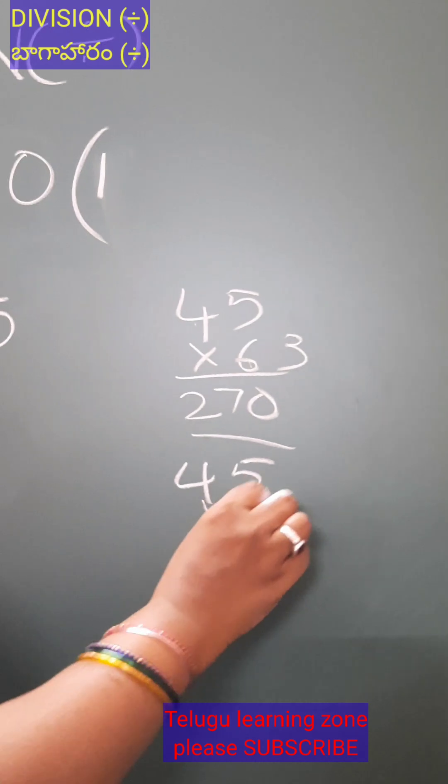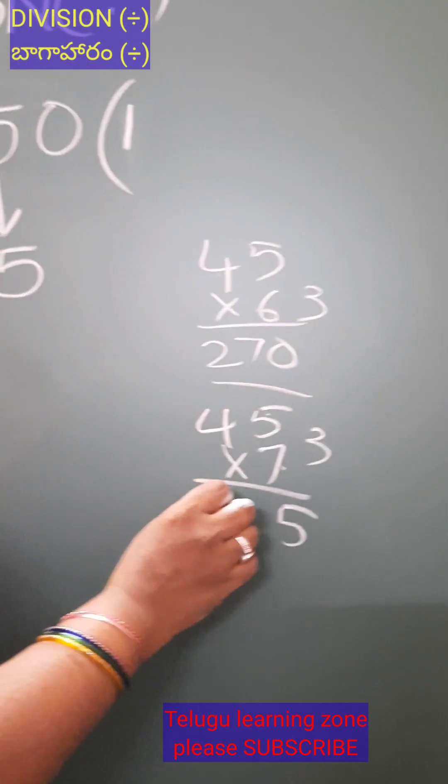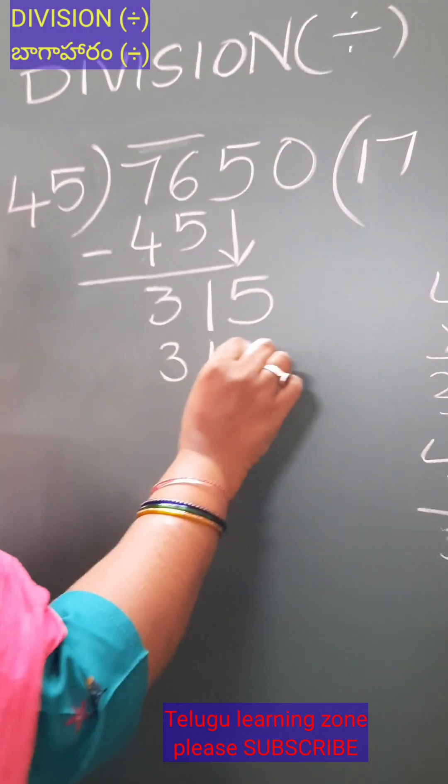45 times 7: 7 fives are 35, 7 fours are 28 plus 3 is 31. Yes, 45 times 7 is 315.